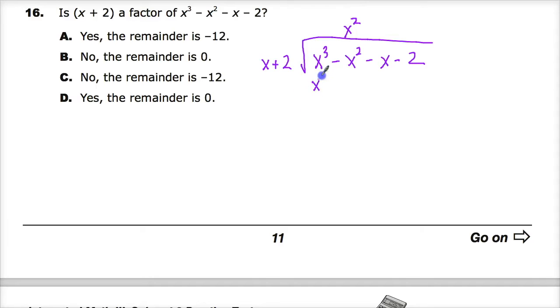You get x to the third minus, or then you get two times x squared. Now here's the thing for me, this is a subtraction. That's how you eliminate it. So I automatically, before I do anything else in this section, go ahead and change the signs of both, because it's minus this and minus this.